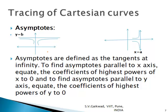The next property is asymptotes. As x tends to a, y tends to infinity, and as y tends to b, x tends to infinity — these lines are asymptotes parallel to the axes, also defined as tangents at infinity. To find asymptotes parallel to the x-axis, equate the coefficient of the highest power of x to zero. To find asymptotes parallel to the y-axis, equate the coefficient of the highest power of y to zero.